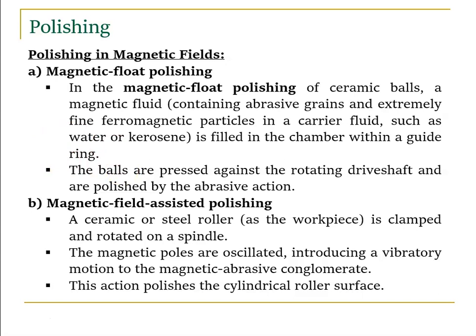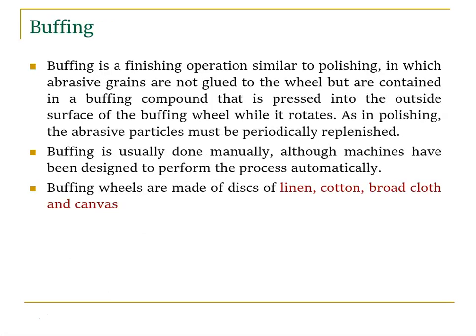In magnetic field assisted polishing, a ceramic or steel roller is clamped and rotated on a spindle. Magnetic poles are oscillated, introducing vibratory motion to the magnetic abrasive conglomerate. This oscillatory and magnetic action polishes the cylindrical roller surface to achieve a good surface finish.